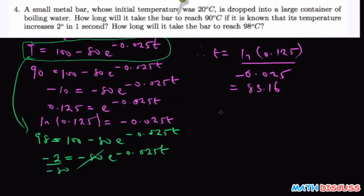e to the power negative 0.025t equals - now negative 2 divided by negative 80 is 0.025.